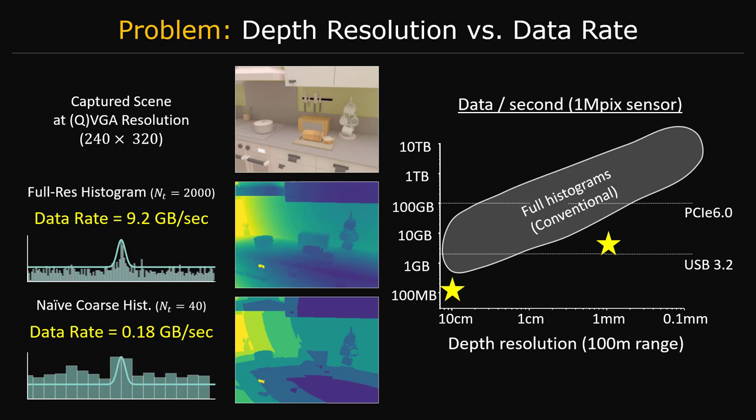In general, we could compress the 3D histogram image effectively if we had it available, because we could simply estimate the distances at each pixel and then discard the histograms. However, this may not be possible because of the amount of in-sensor memory required to store the large histogram image.